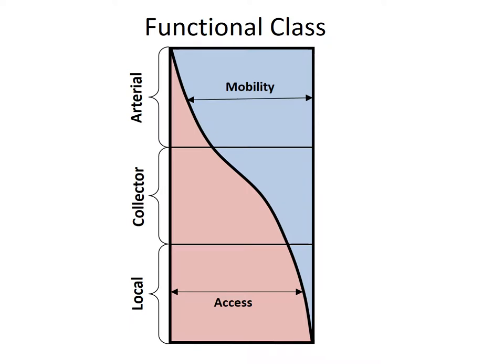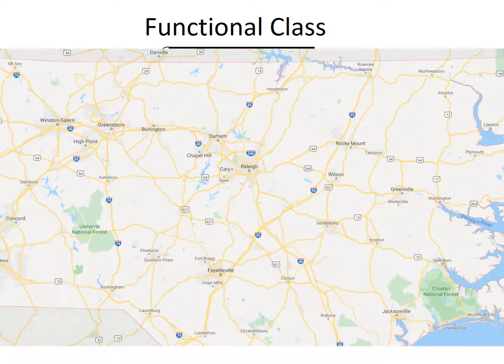Google Maps actually provides us with a reasonable example of the functional classification system. From a regional or statewide view, we can only see the arterial roads — primarily roads designated as interstate and US highways — shown in yellow on this map.